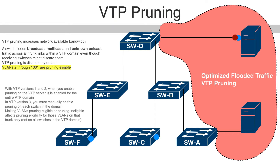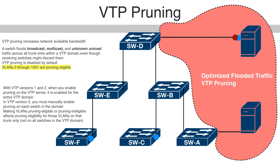With VTP versions 1 and 2, when you enable pruning on the VTP server, it is enabled for the entire VTP domain. In VTP version 3, you must manually enable pruning on each switch in the domain. Making VLANs pruning eligible or pruning ineligible affects pruning eligibility for those VLANs on that trunk only, not on all switches in the VTP domain.